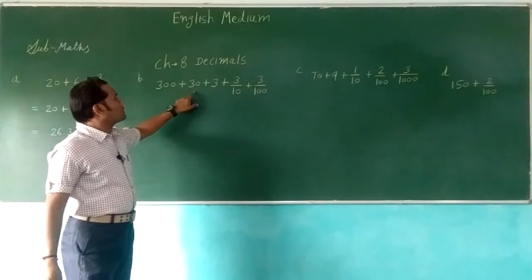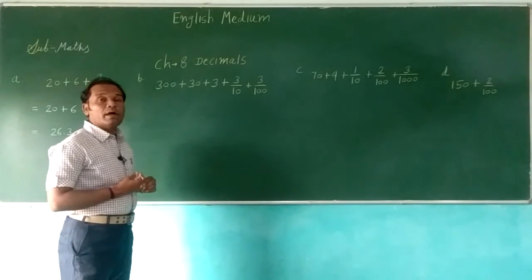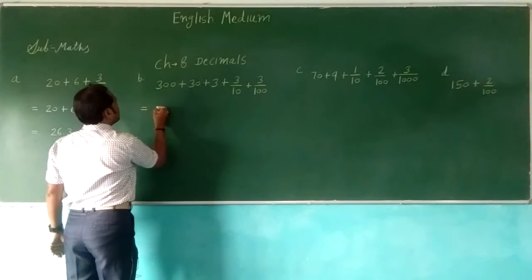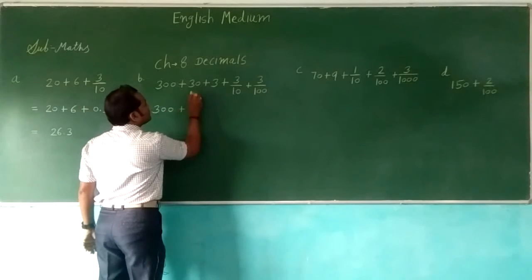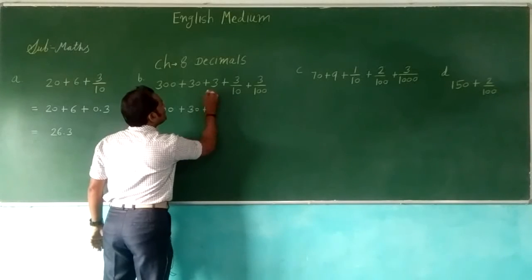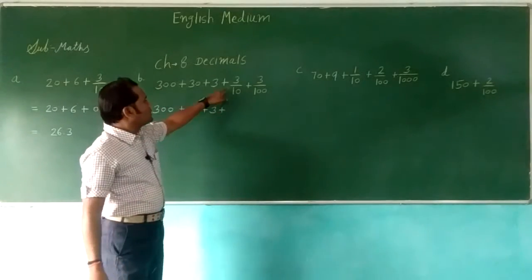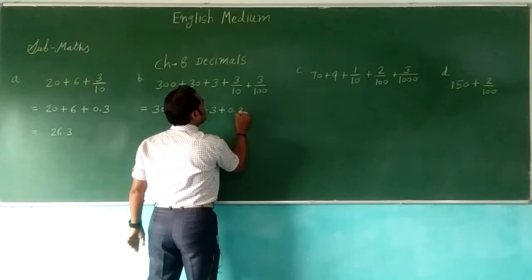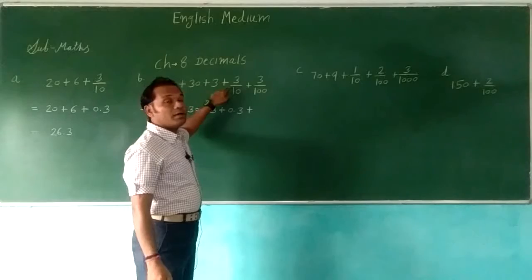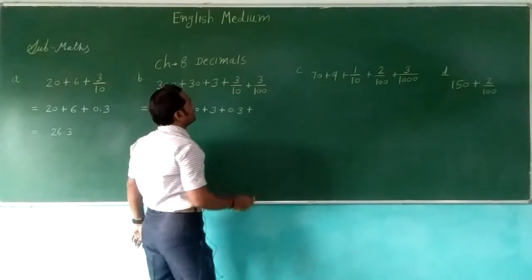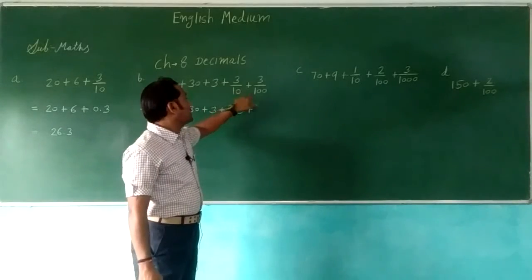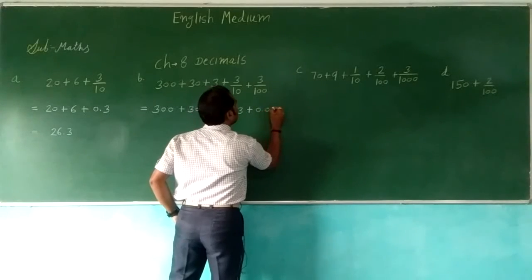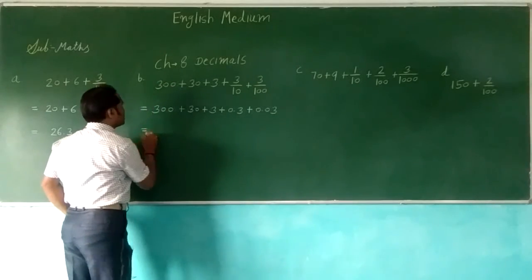Now next sum: 300 plus 30 plus 3 plus 3 by 10 and 3 by 100. This sum uses the same method. We'll change into decimal form: 3 by 10 is 0.3 and 3 by 100 is 0.03. So now it is very easy to add.